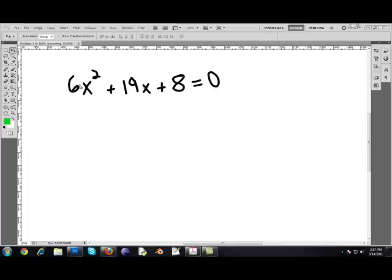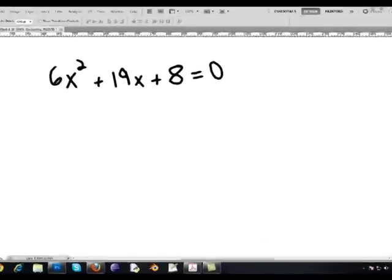First thing you're going to want to do is multiply the first number by the last number. The product you get is 48 and you're going to want to write that off to the side.